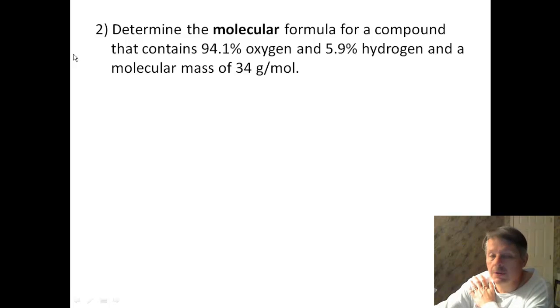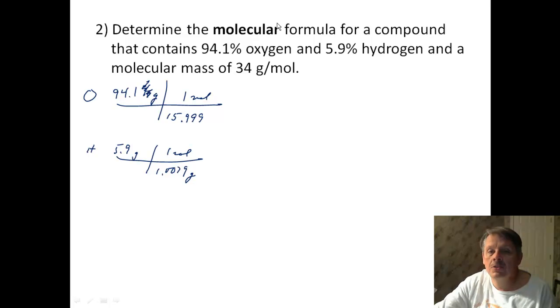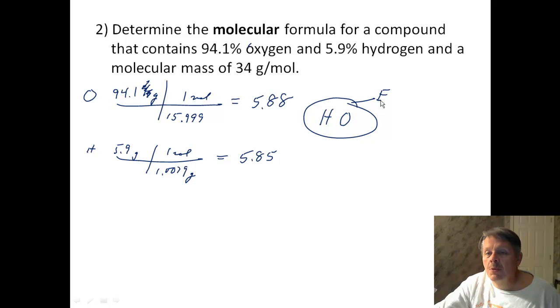Determine the molecular formula for a compound that contains 94.1% oxygen and 5.9% hydrogen. 94.1%, which we're going to treat like grams. And oxygen is 15.999 grams per mole. Hydrogen is 5.9 grams, which we are again looking at 1.0079 for hydrogen. And that's it. We only have oxygen and hydrogen. So my moles here for oxygen is 5.88. And my moles here for hydrogen is 5.85. Clearly, I have a one-to-one relationship. So I have H and O. That's my empirical formula.